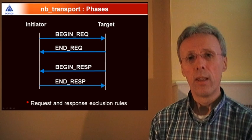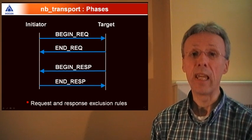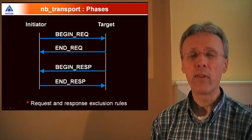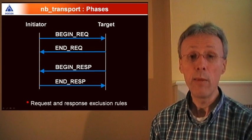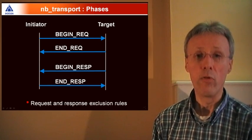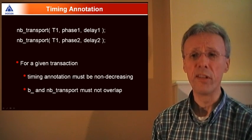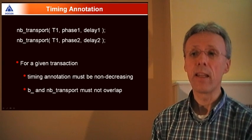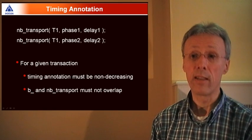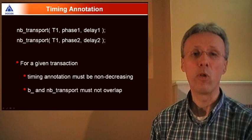Let's start with NB transport. NB transport completes a transaction in multiple phases. The base protocol supports exactly four phases, marking the beginning of the request, the end of the request, the beginning of the response, and the end of the response. In TLM 2.0, you can only have a single request and a single response outstanding at any particular point in time through any given socket. Those are called the request and response exclusion rules, and the checker checks that those exclusion rules are being obeyed. It also checks for proper timing annotation. If you have a sequence of NB transport calls, then for a given transaction through a given socket, the timing annotation must be strictly non-decreasing. If you combine NB transport and B transport through the same socket at the same time for the same transaction, then blocking and non-blocking transport calls are not allowed to overlap. They must be strictly separated for the same transaction, and that gets checked.